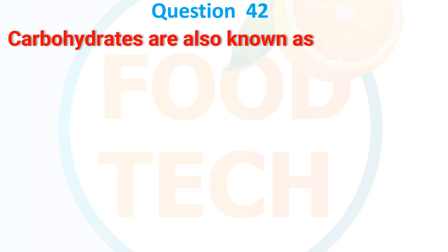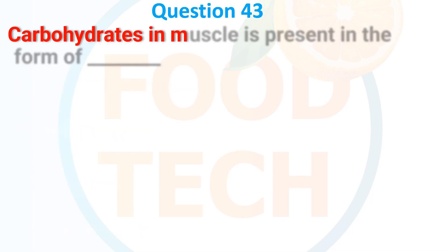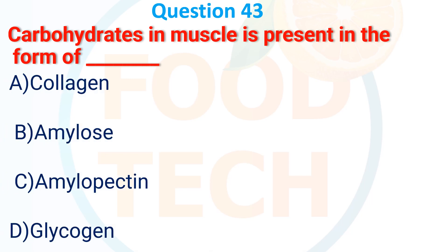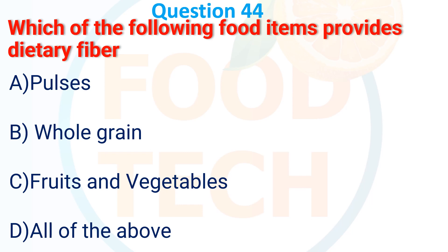Question 38: Carbohydrates are also known as — A. Hydrate of carbon, B. Saccharide, C. None of the above, D. Both A and B. The answer is D. Both A and B. Question 39: Carbohydrate in muscle is present in the form of — A. Glycogen, B. Amylose, C. Amylopectin, D. Glycogen. The answer is D. Glycogen. Question 40: Which of the following food items provide dietary fiber? A. Pulse, B. Whole grain, C. Fruit and vegetable, D. All of the above. The answer is D. All of the above.